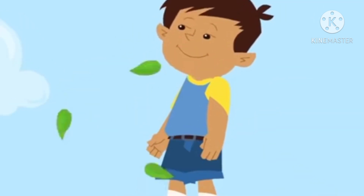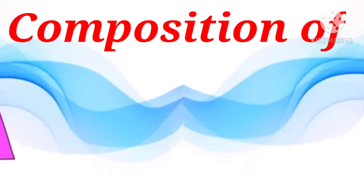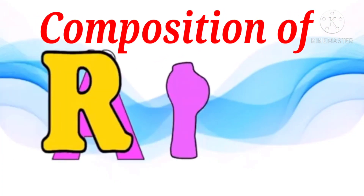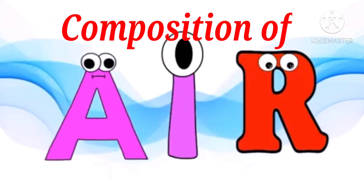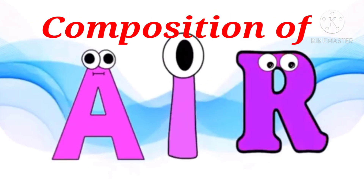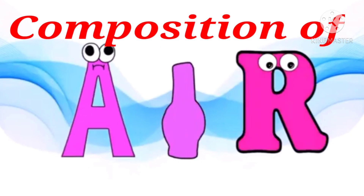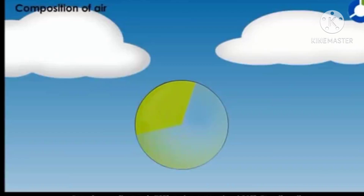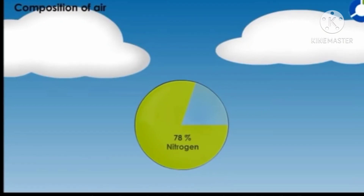Ab ye air bani kaise hai — what is the composition of air? Children, to understand the composition of air, just look at the pie chart shown in the video. The main gas present in the air is nitrogen, which is nearly 78%.